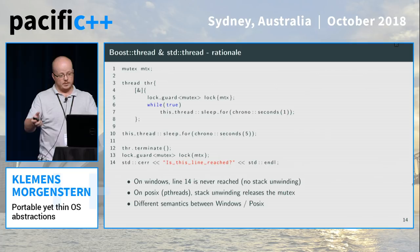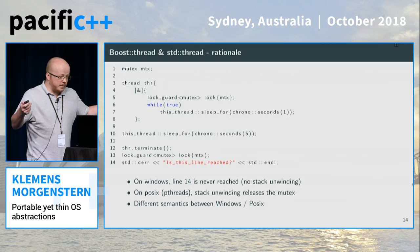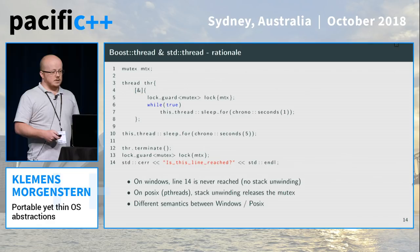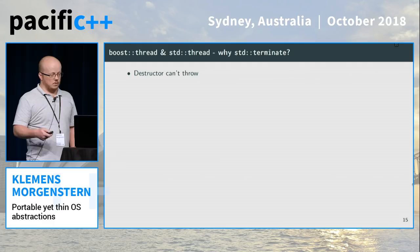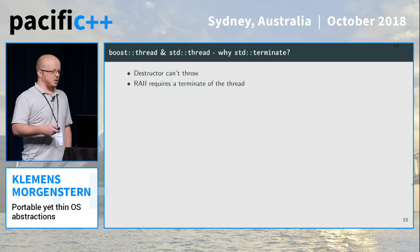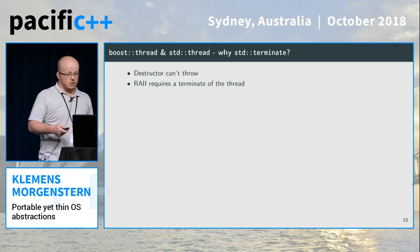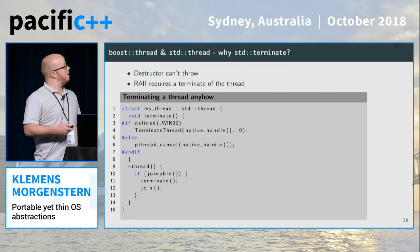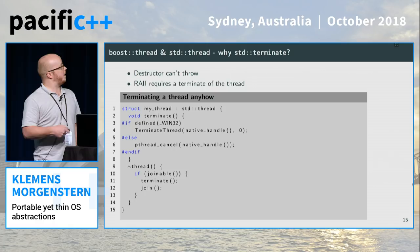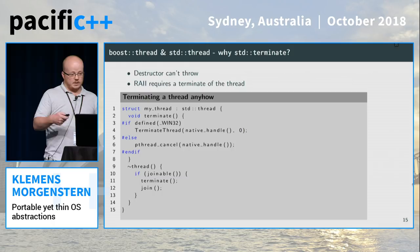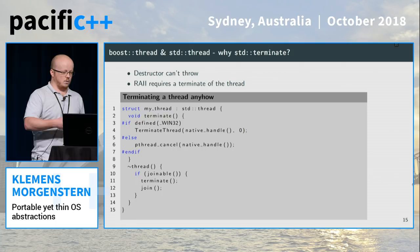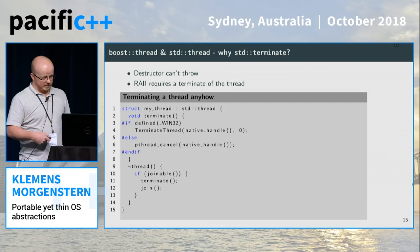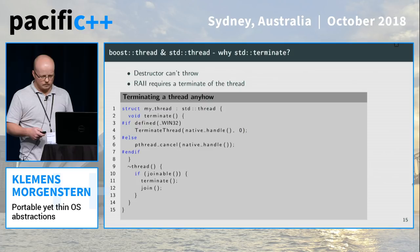If a library provides a terminate function that on one system can cause a deadlock and on the other can't, it's not portable. So because we have different semantics, we can't implement a terminate function, and we can't implement a cancel function either because we wouldn't have that on Windows. The destructor can't throw, so the decision was: the only way to handle a still-running thread in the destructor is to terminate the whole application — you must join the thread beforehand. If you still want a terminate function, that's what native_handle is for: with about 15 lines you inherit std::thread, implement terminate, and call it in the destructor.